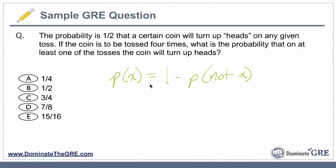So let's first look at the most obvious wrong answer — the eye-catcher wrong answer. On the GRE, there's almost always an answer choice that the average test taker might pick if he or she doesn't know how to do the problem. And here, that answer choice would be A, one-fourth. Why would that be the obvious wrong answer choice?